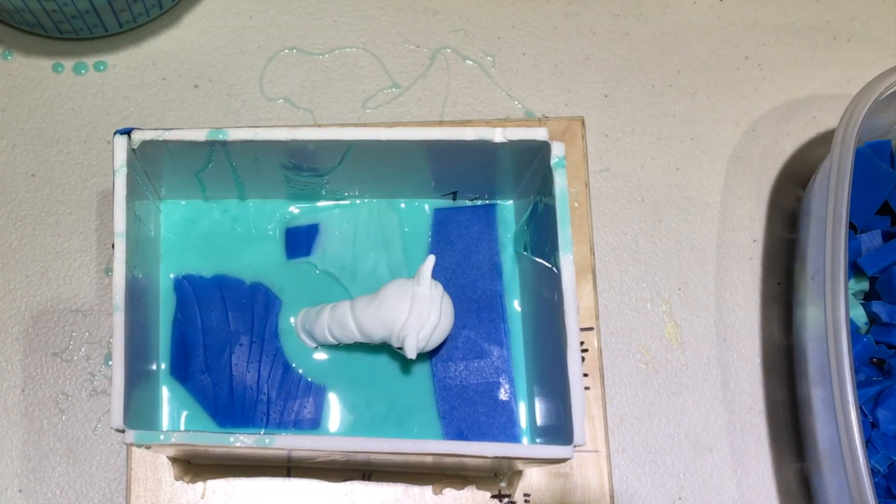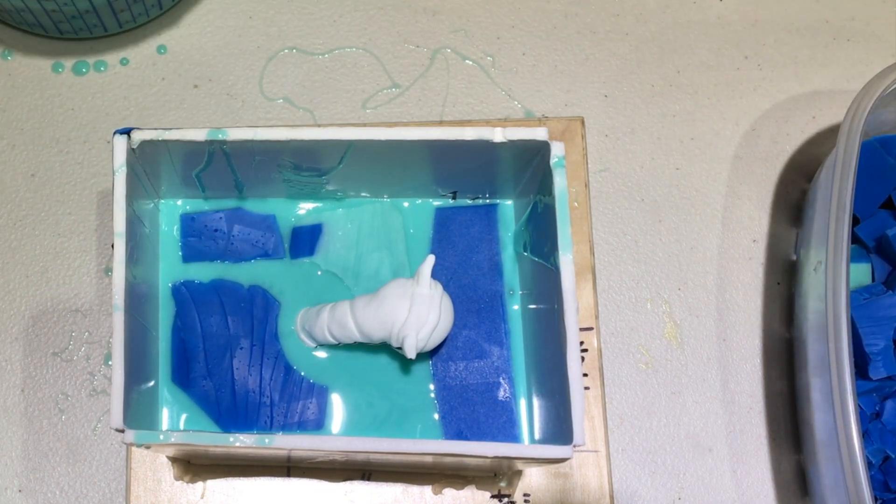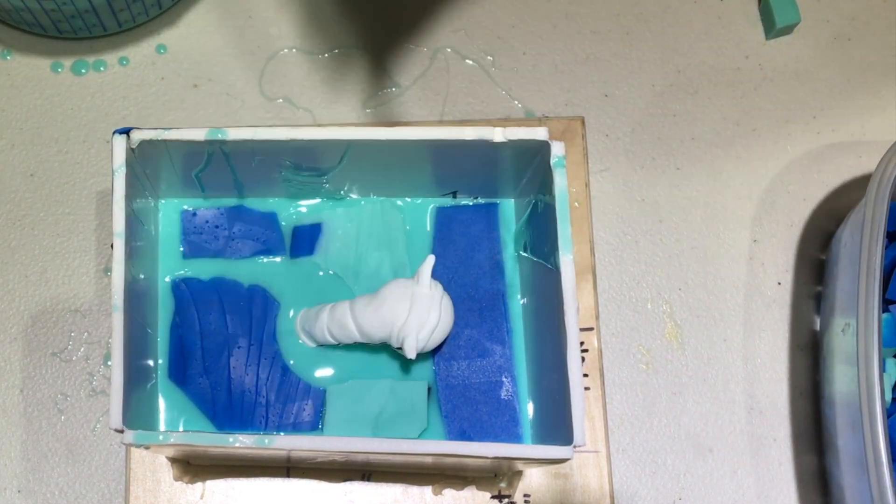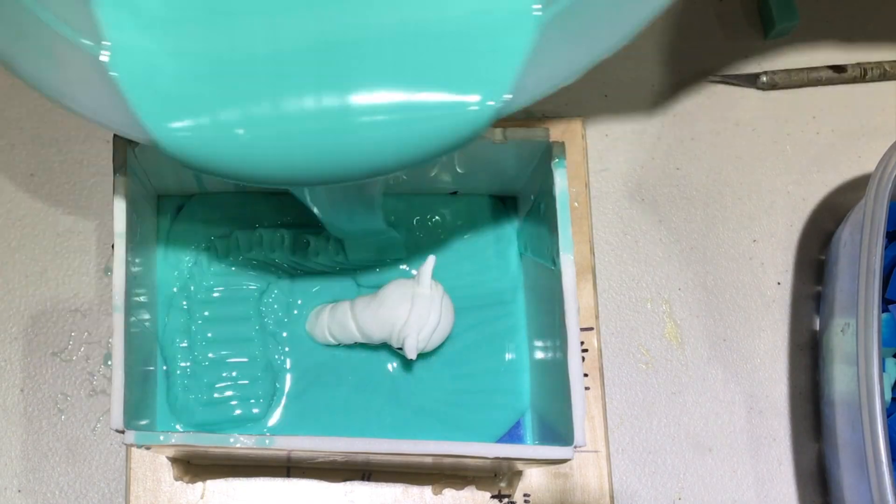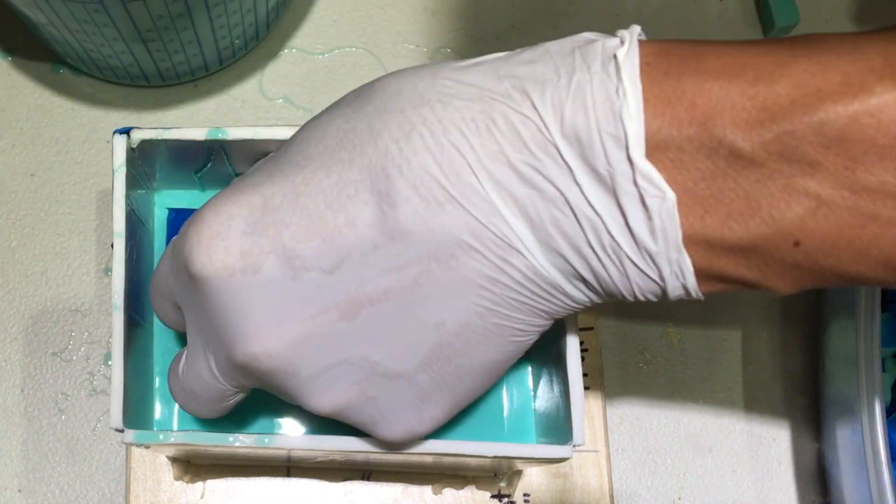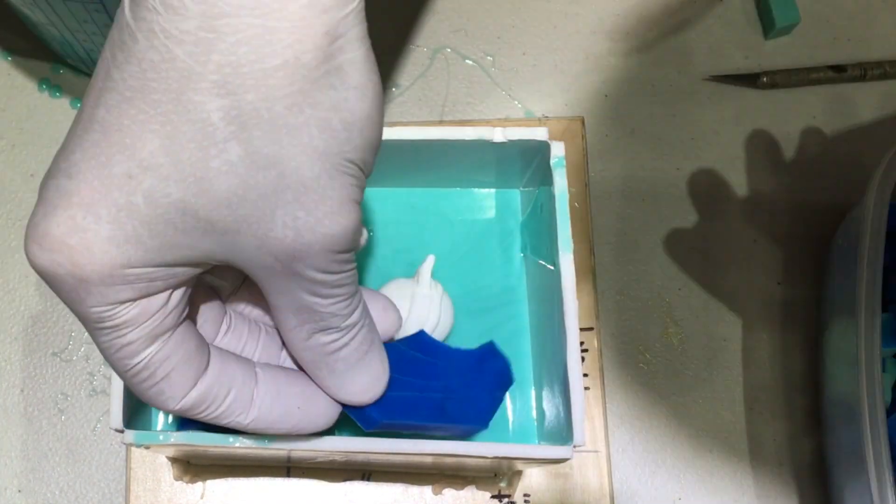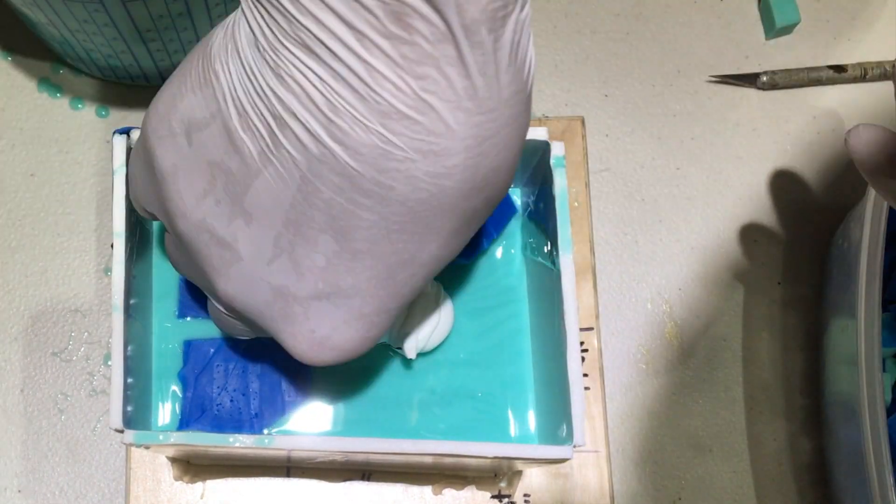And then for the second batch, it's the exact same thing as the first batch. A little layer of silicone, a little layer of the mold pieces, another layer of silicone, all the way up to the top. Make sure to check the bottom of your mold box for leaks to make sure no silicone is leaking out.